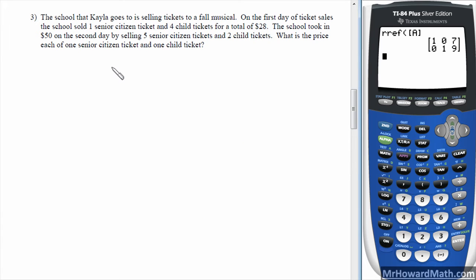All right, let's look at the next one. Next example, the school that Kayla goes to is selling tickets to a fall musical. First day, they sold one senior citizen ticket, four child tickets, for a total of 28. School took in $50 total, and they sold five senior citizen tickets, two child tickets. What is the price? So we want the price of each of the two types of tickets.